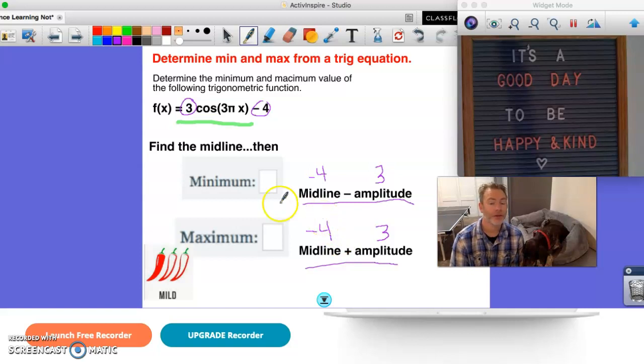So to find my minimum, I'm going to take negative four minus three. That's going to be minus seven. And then to find my maximum, I'm going to start at my midline and I'm going to go up three because that's my amplitude. So minus one.